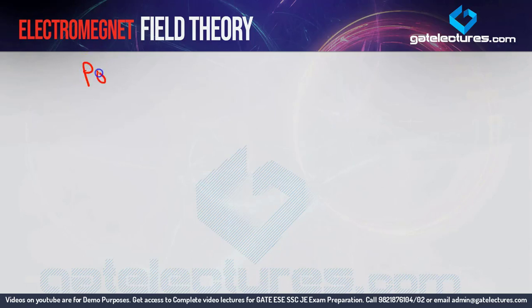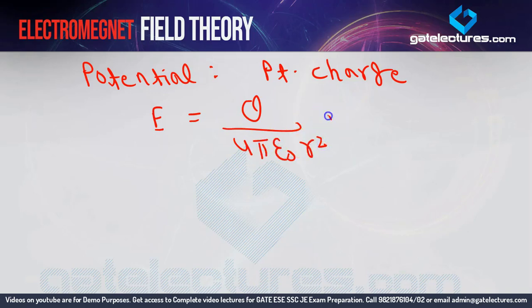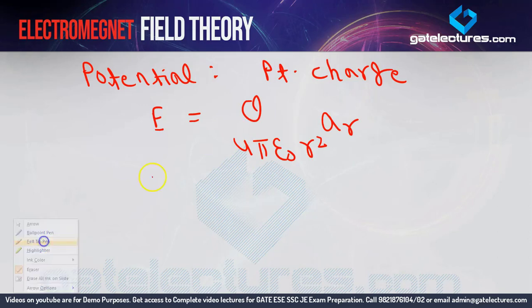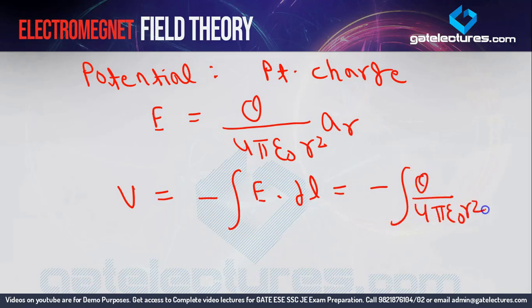Now using this formula, we will calculate potential for different electric field values. First, I will calculate potential for a point charge. For a point charge, we already calculated the electric field value — you may remember: E = q / (4πε₀r²). This was calculated in the first application of Gauss law.